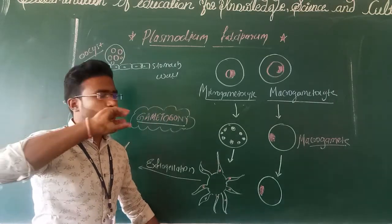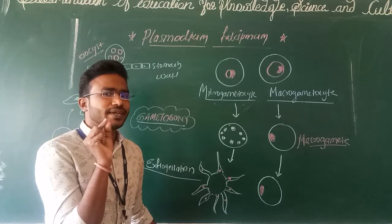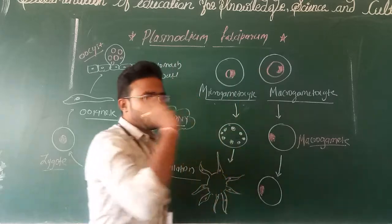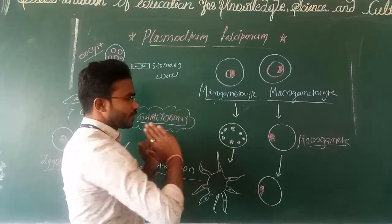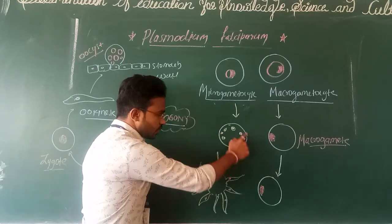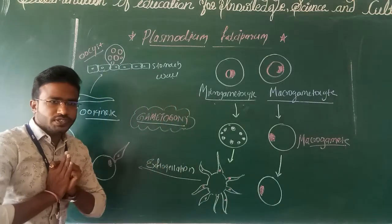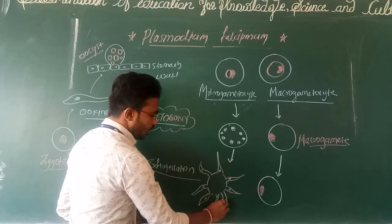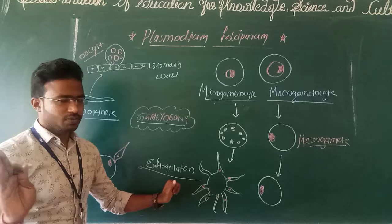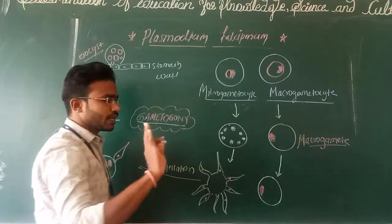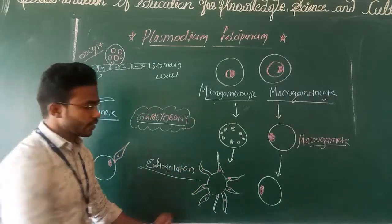The nuclei gather at the periphery and will function as macro gametes. In macrogametocytes, the nucleus remains at the center and will work as a macro gamete. From the microgametocyte, 8 flagellated structures are formed — this multi-flagellated structure is called micro gametes. Each flagellated structure contains a nucleus inside it.